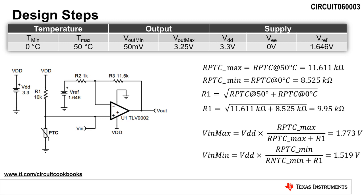The first design step is to calculate the resistance of R1. This is done by taking the square root of the sum of the PTC resistance at 50 degrees Celsius and 0 degrees Celsius. This equates to a resistance of 9.95 kiloohms. The next closest standard value is 10 kiloohms, so we will use this value for the design, as shown by R1 in the schematic.